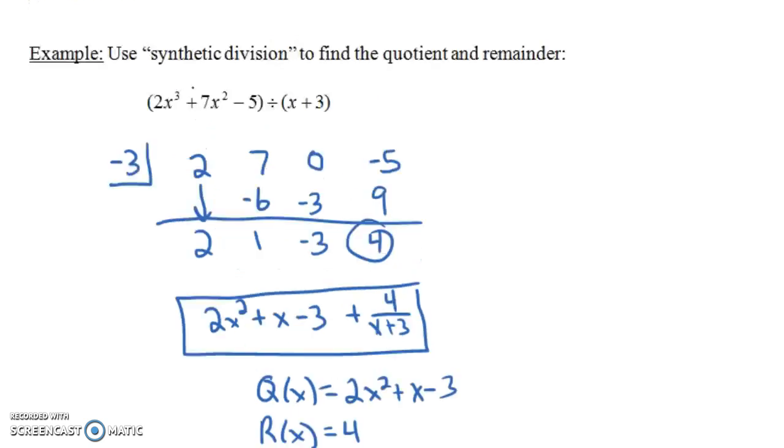And by the way, that number 4, again, is the same thing that you'd have gotten if you had plugged in negative 3 into this polynomial. You get negative 27 times 2, that's negative 54, and then plus 9 times 7 is 63, so that's 9, and then 9 minus 5 is 4. So that's how you do synthetic division. And again, it's just a quick way of doing long division where you're eliminating all these x's. And one of the things you have to remember, again, is that when you're doing this step here, you don't end up subtracting these numbers like you do for long division. You're adding these numbers.